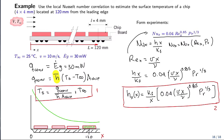Let's proceed to compute the different values for H. The expression depends on fluid properties: conductivity, kinematic viscosity, and Prandtl number. The only information we have is that the fluid temperature is 25°C and the velocity is 10 m/s. The question is: at what temperature do we evaluate the properties?